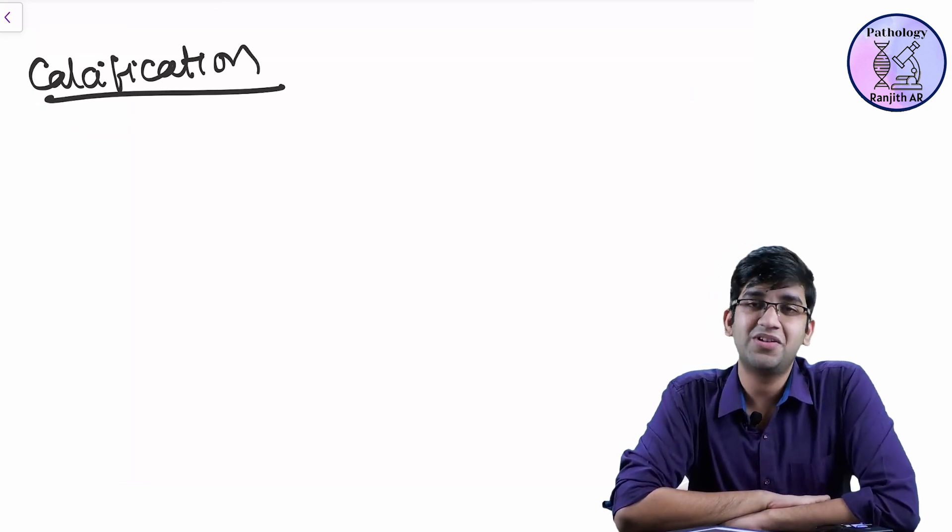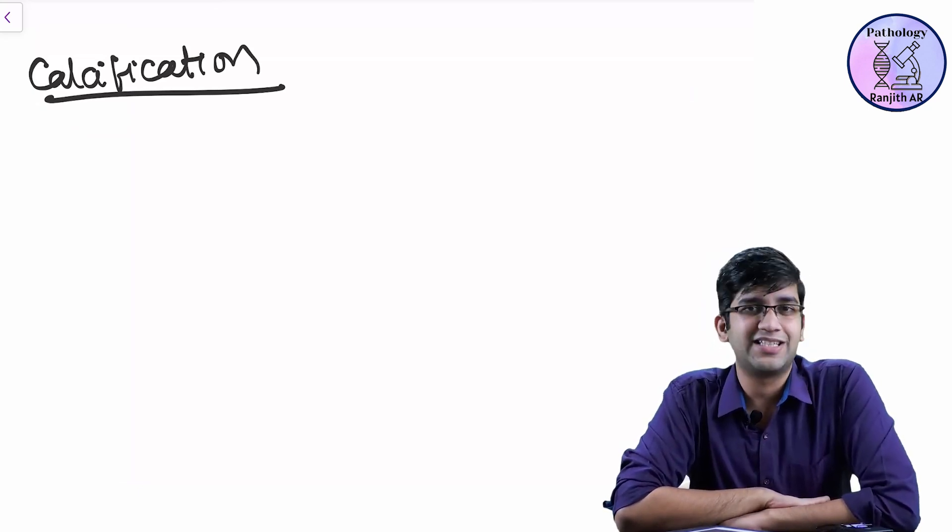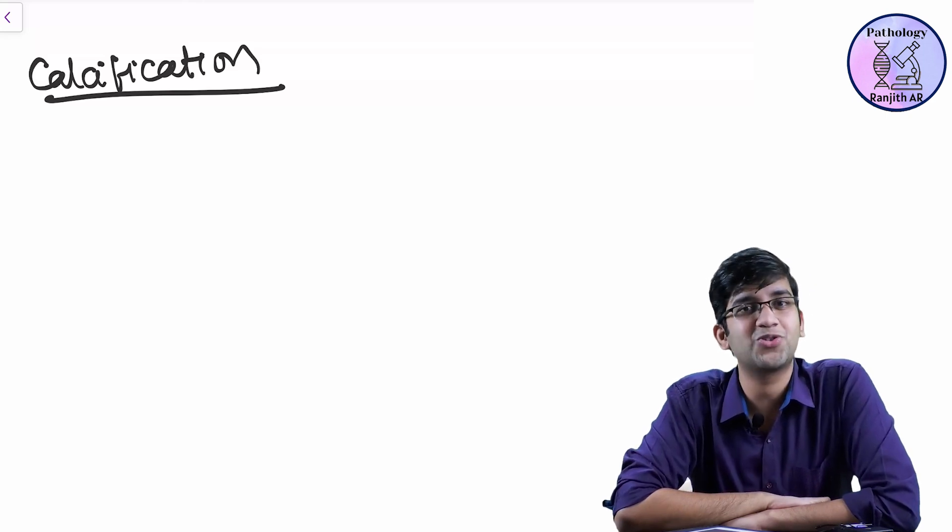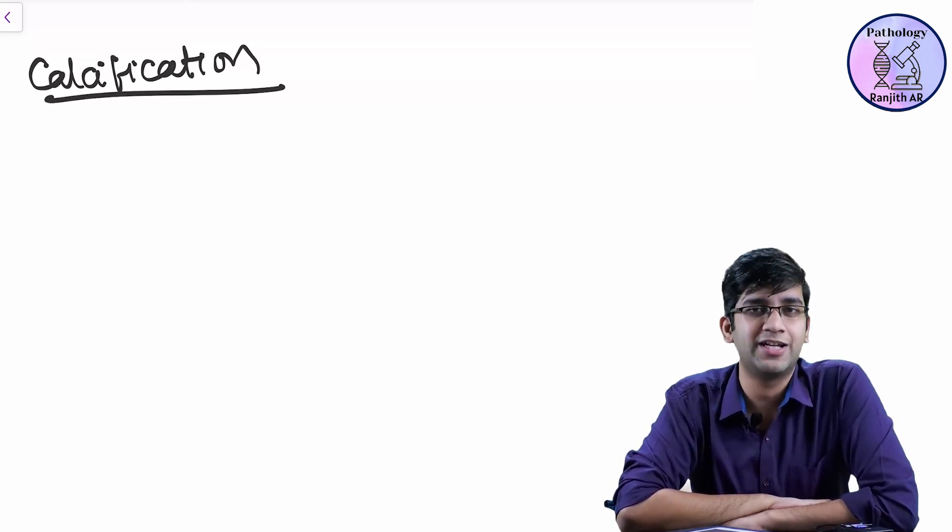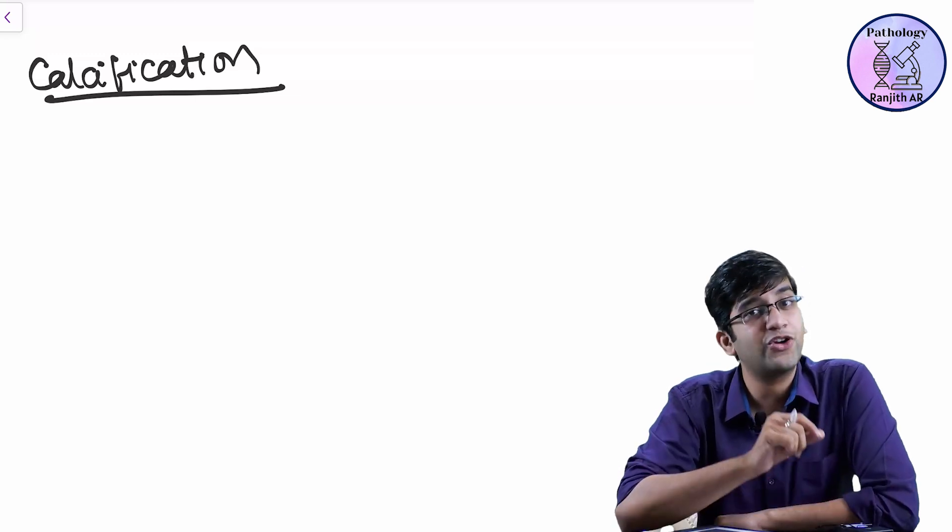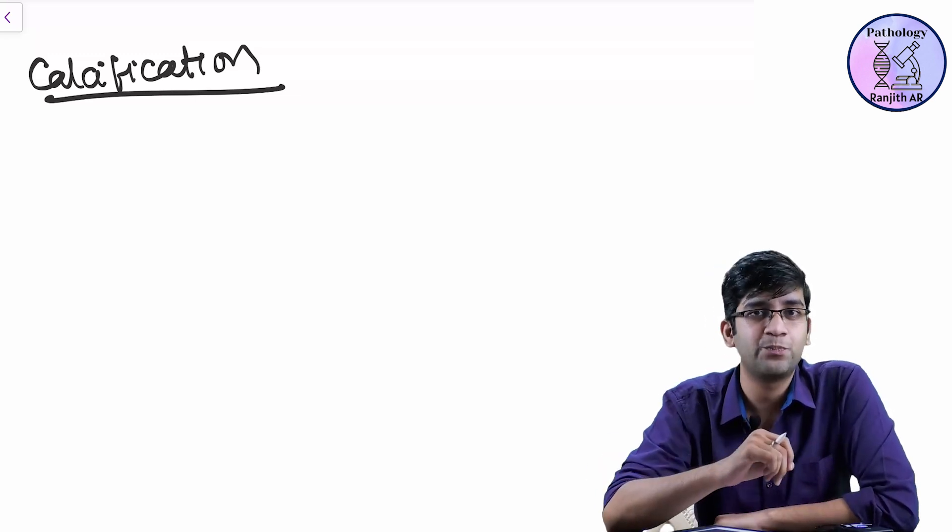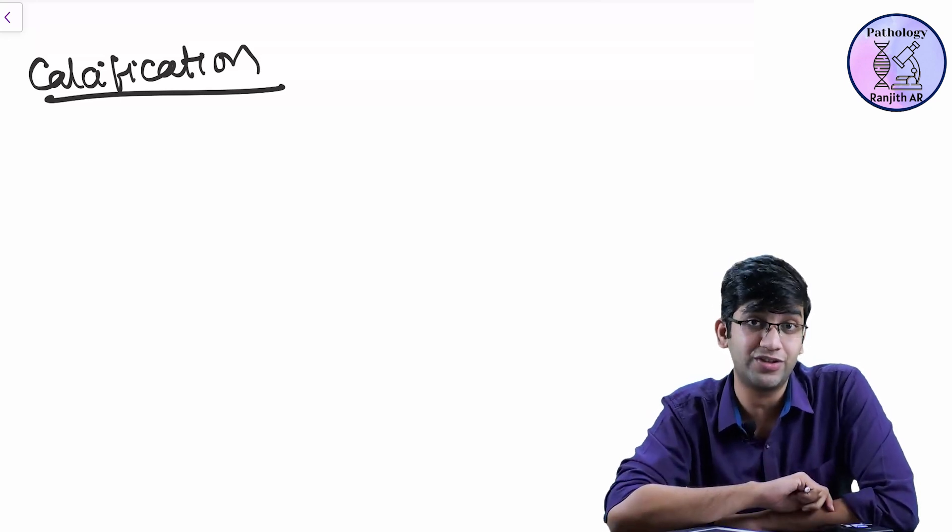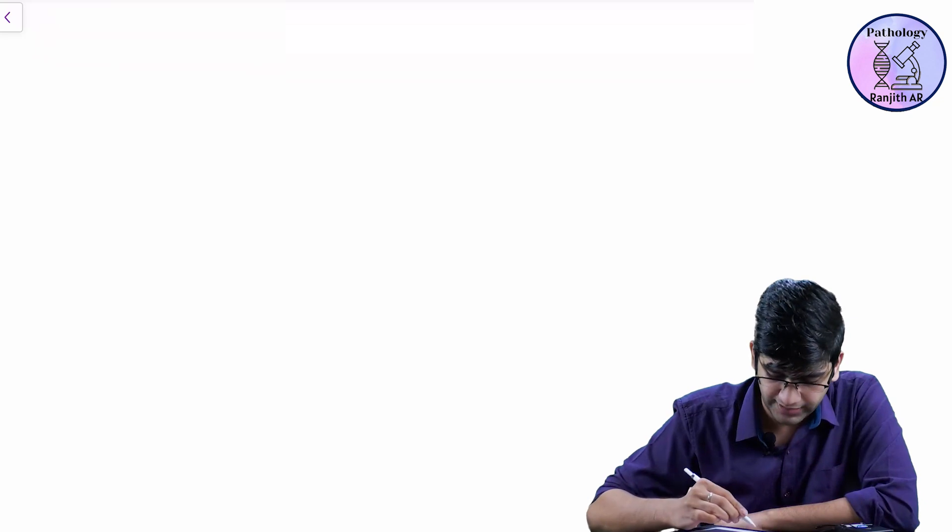Students read again and again about calcification - dystrophic and metastatic. You memorize it a hundred times, but you'll forget it because you're not reading the correct way. I'll give you two words and we're going to extrapolate with those two words, and I'll make sure you'll never forget these two things again.